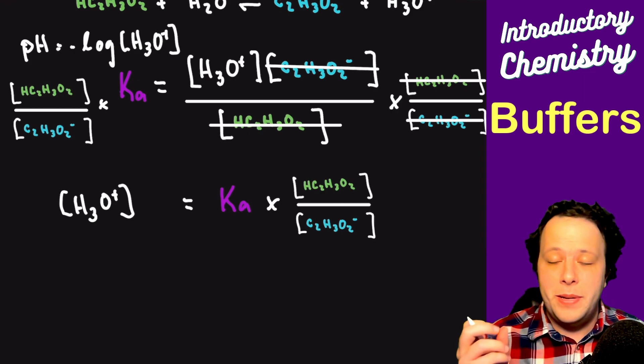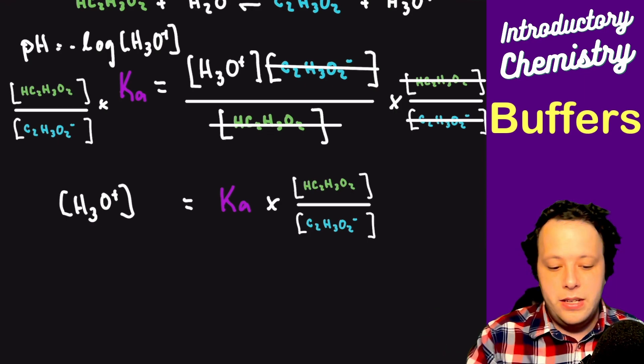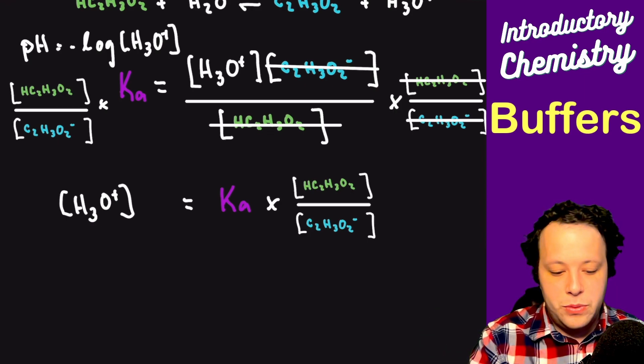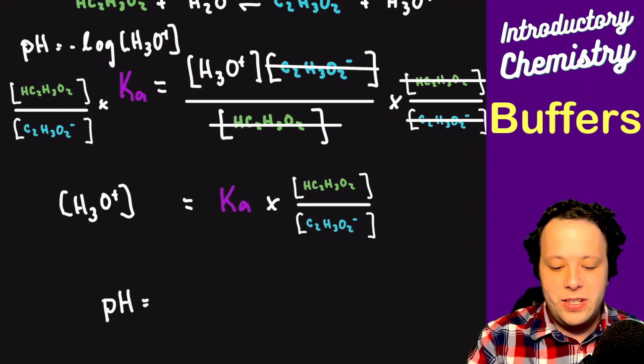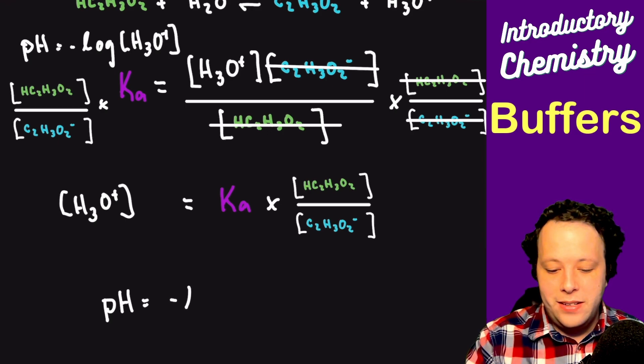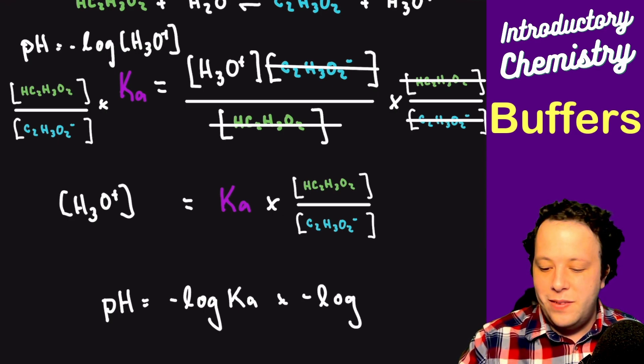The whole reason we're doing this is so we can actually find the pH. The last step is, in order to find pH, you have to take the negative log of everything. So if we do that, take the negative log of our H3O+ concentration, we would have pH is equal to the negative log of Ka times the negative log of our concentrations.